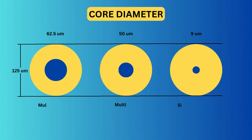The diameter of the core differs between single-mode and multi-mode fibers, and this difference affects how each type of cable transmits light. In single-mode fiber, the core diameter is very narrow, typically around 8 to 10 microns. On the other hand, multi-mode fiber has a much wider core, usually 50 or 62.5 microns.